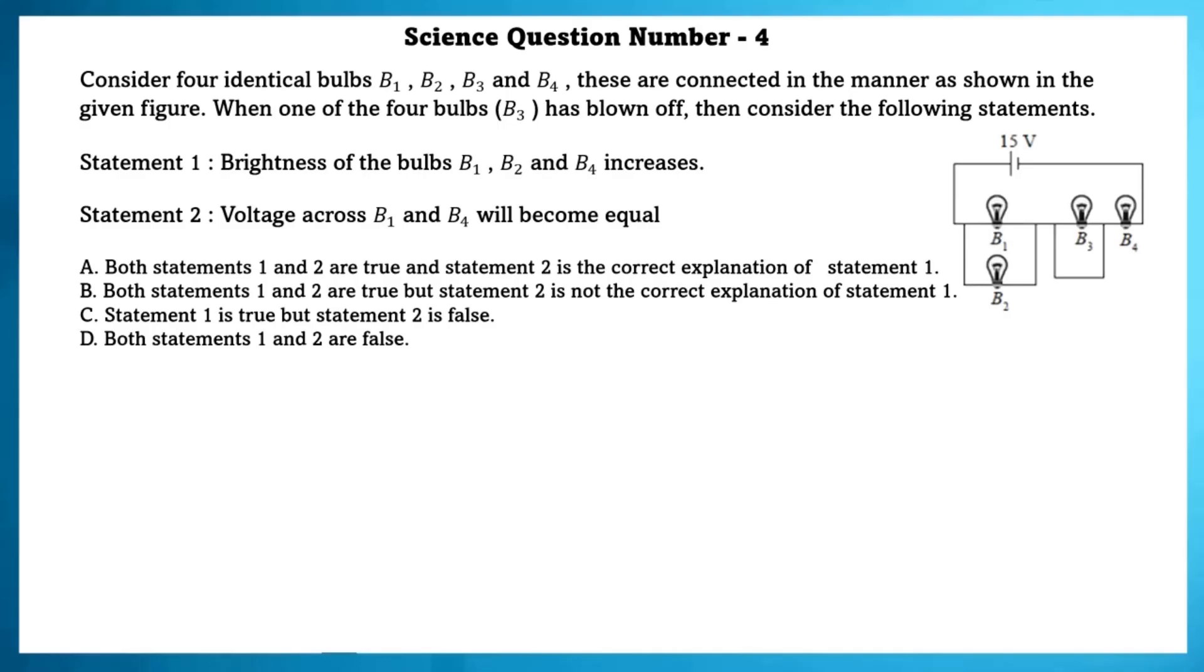Science Question Number 4. Consider 4 identical bulbs: B1, B2, B3 and B4. These are connected in the manner as shown in the given figure. When one of the 4 bulbs, B3, has blown off, then consider the following statements. Statement 1: Brightness of the bulb B1, B2 and B4 increases.